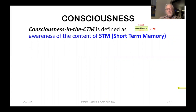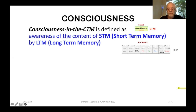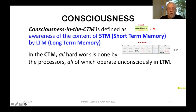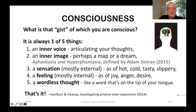Consciousness in the CTM is defined as awareness of the content of short-term memory by long-term memory. All hard work is done by the processors, all of which operate unconsciously in LTM. Assuming CTM is a good model for human consciousness, we are conscious of only the gist that is in STM — no more, no less. What is that gist? It is always one of five things: an inner voice articulating your thoughts, an inner image, a sensation, a feeling, or a wordless thought — like a word on the tip of your tongue.